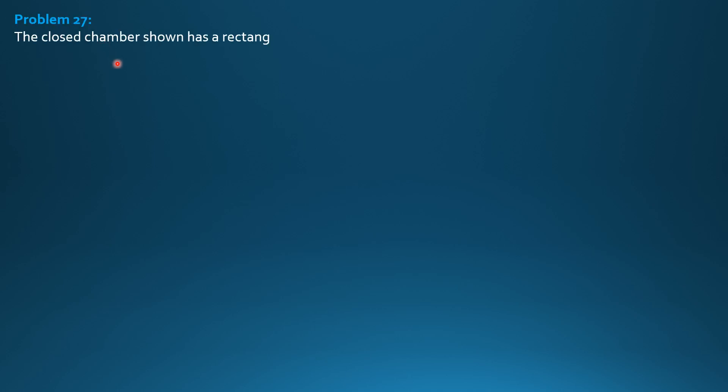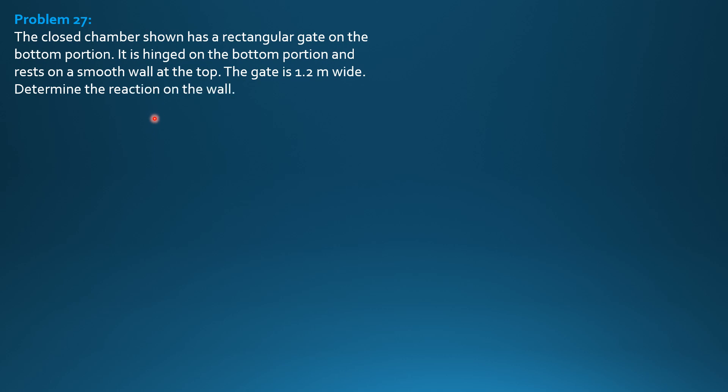So, example 27. The closed chamber shown has a rectangular gate on the bottom portion. It is hinged on the bottom portion and rests on a smooth wall at the top. The gate is 1.2 meters wide. Determine the reaction on the wall.